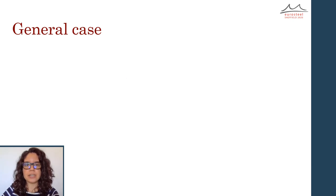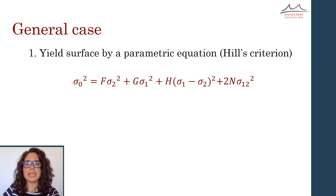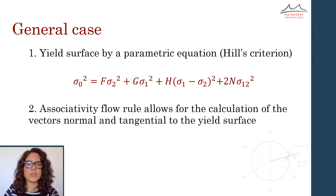Basically, theoretical developments were introduced by implementing a parametric equation to define the yield criterion, and using the associativity flow rule for the calculation of the vectors normal and tangential to the yield surface.